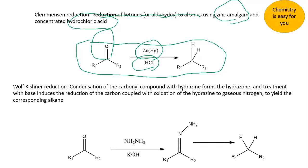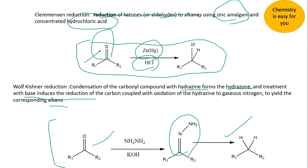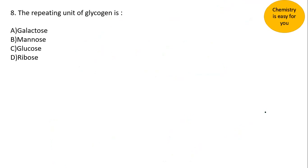Wolff-Kishner reduction involves reaction with hydrazine to form a hydrazone, which then undergoes base-induced reduction to give the corresponding alkane — nitrogen is removed. In both cases, the starting compound contains C=O and the end product is an alkane. If specific reagents are given in the question — zinc amalgam and HCl — the answer is Clemmensen; if hydrazine is given, the answer is Wolff-Kishner. Here, since only the functional group conversion is asked, the answer is both.